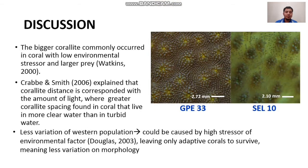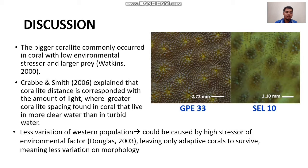We also found that the eastern population has a bigger coral height and bigger spacing between coral polyps, which is correlated with low environmental stressors, larger prey availability, and clearer water. Less variation in the western population could be caused by high environmental stressors, leaving only adaptive corals to survive and resulting in less morphological variation.